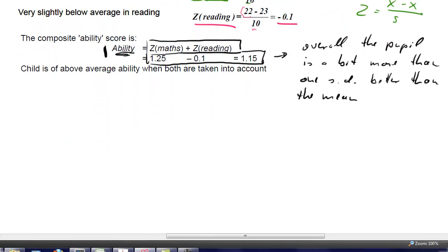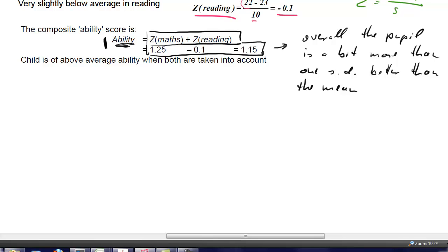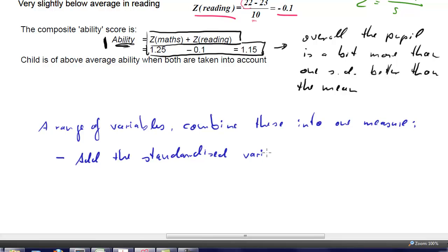To summarize what we have done in this example and more generically, we take a range of variables and combine them into one measure. The example we used here was to add the standardized variables. That's one very simple way. Now this is not the only way how several variables can be combined, but it's the only one we talk about in this course.